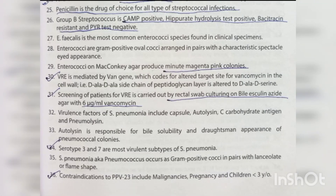Anti-DNase B antibody titer greater than 300–350 units/mL is diagnostic of post-streptococcal glomerulonephritis and pyoderma. Penicillin is the drug of choice for all types of streptococcal infections. Group B streptococcus is CAMP positive, hippurate hydrolysis test positive, bacitracin resistant, and PYR test negative. E. faecalis is the most common Enterococci species found in clinical specimens; enterococci are gram-positive oval cocci arranged in pairs with a characteristic spectacle-eye appearance.